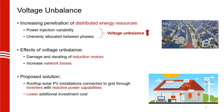The solution we propose to mitigate voltage unbalance is using solar PV inverters. As you can see in this figure, solar panels are typically connected to the grid via power electronic inverters which have reactive power capabilities. We can use this reactive power support to mitigate voltage unbalance. Since we are using existing equipment, this can be a very cost-effective solution.